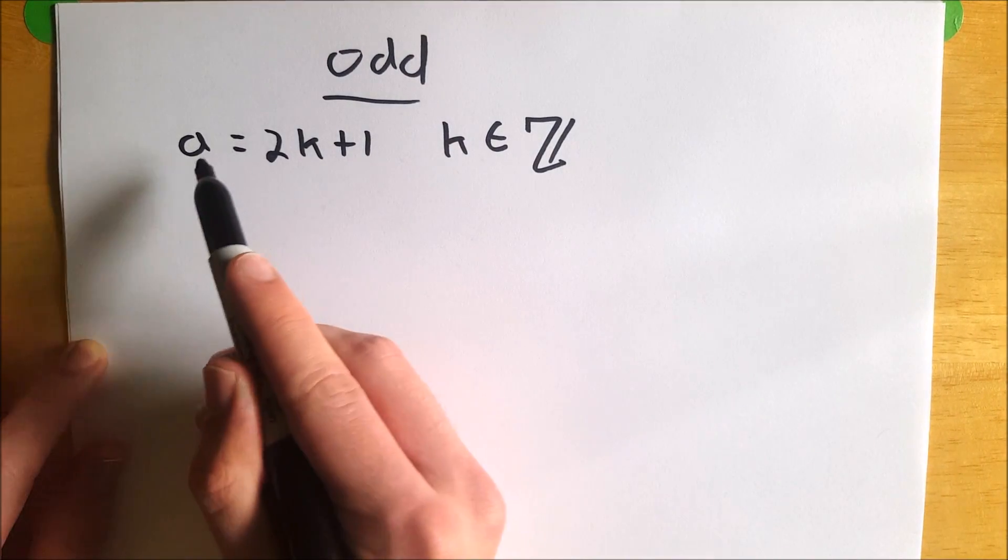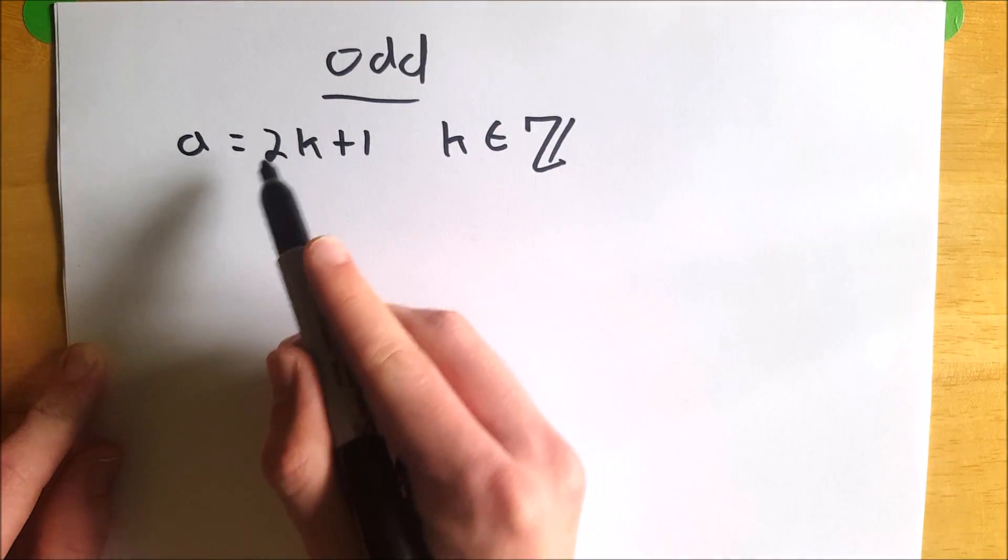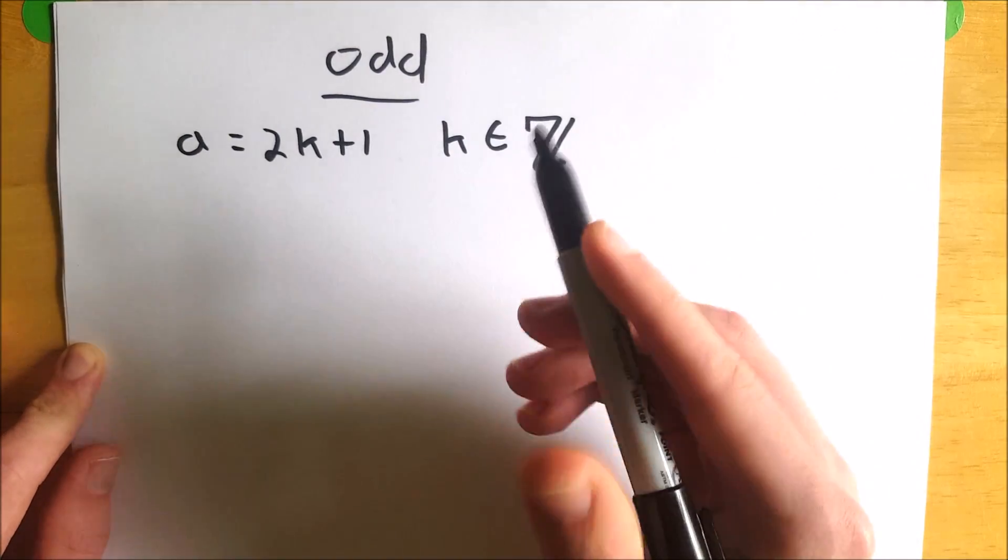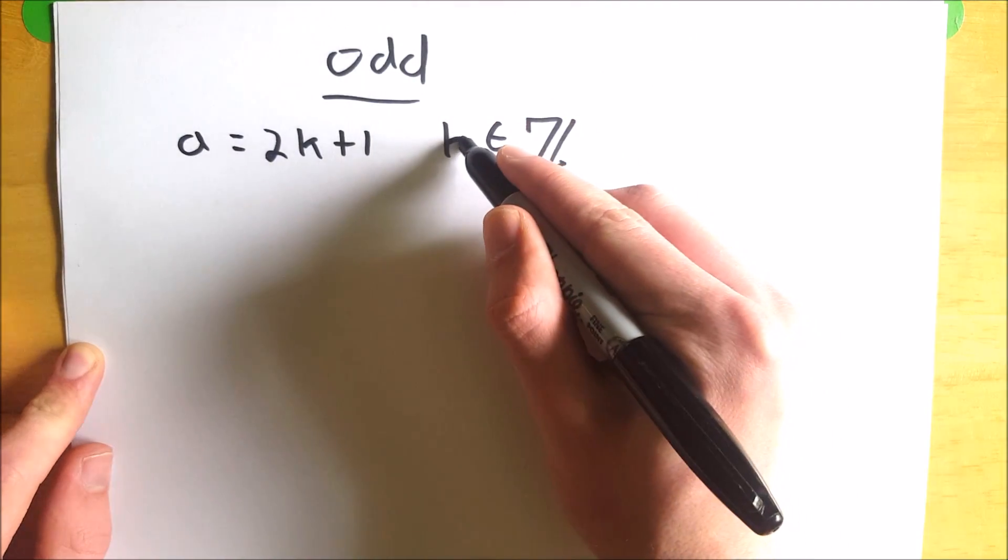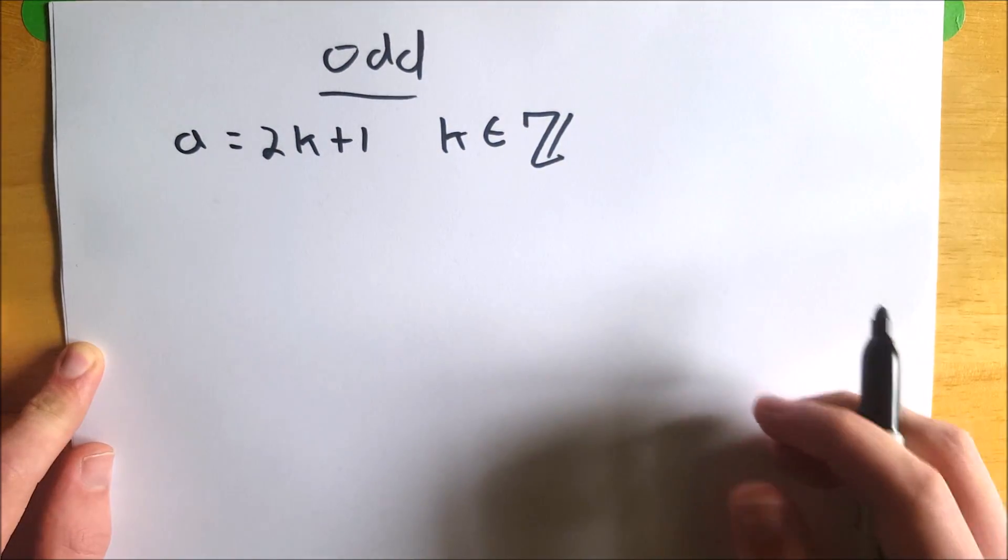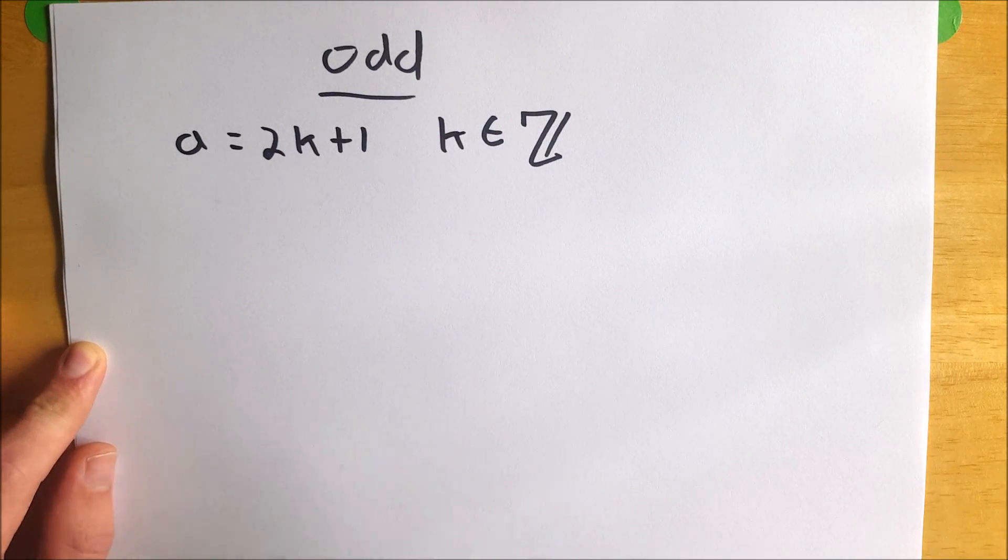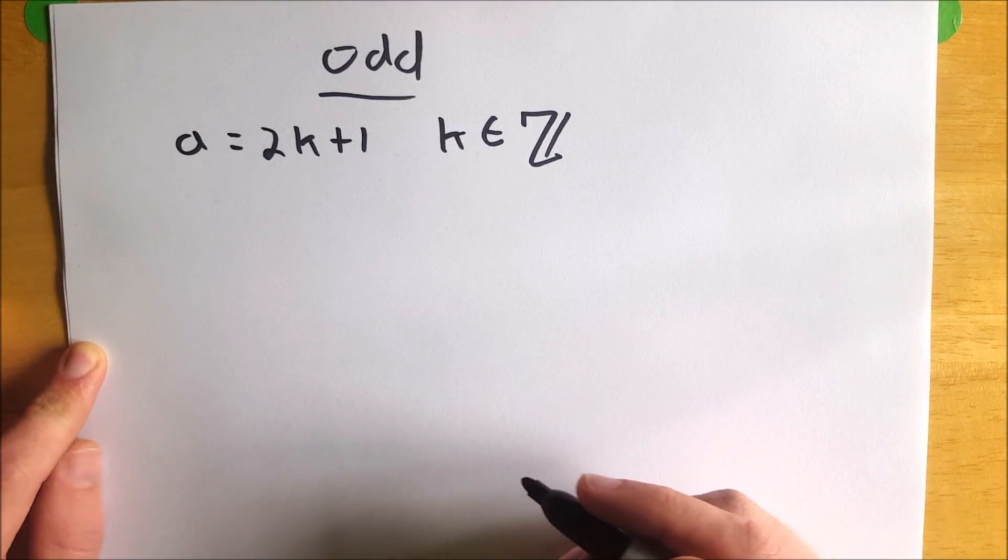All you have to do to prove that some number a is odd is show that it is equal to 2k plus 1 for some k that is an element of the integers, which are all the whole numbers, 0, all the negative numbers, but no decimals, no fractions, nothing like that.